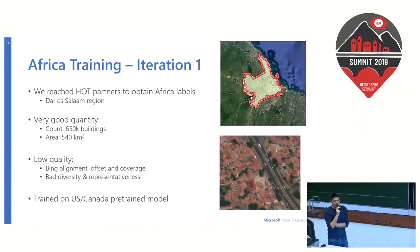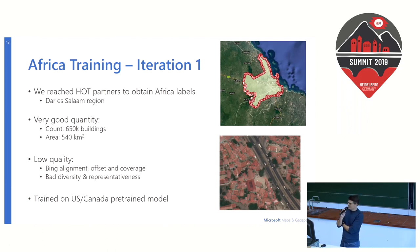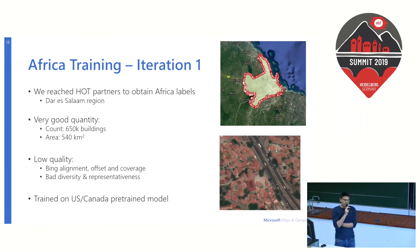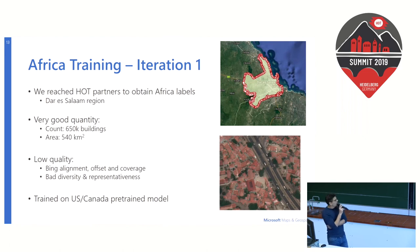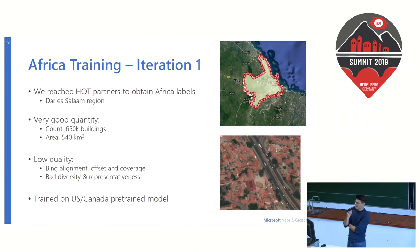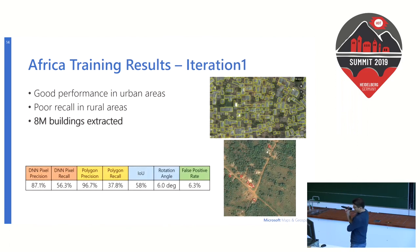That's why we reached out to our HOT partner Nate and Felix for help. We asked them to provide data more or less aligned with Bing imagery. They provided a large region around Dar es Salaam, which is pretty well aligned to our data — not perfectly, but it has a great quantity of labels and area coverage. The main problem, however, is that it's not diverse: it represents only a large city region in Africa, with no labels for rural areas.